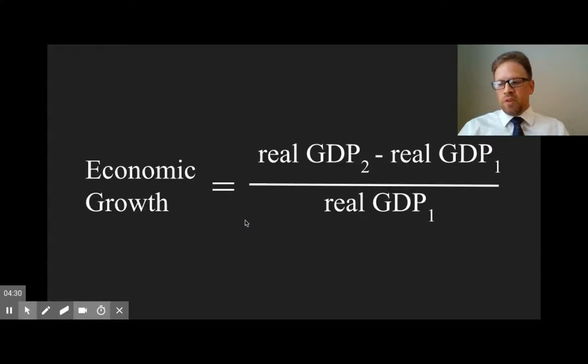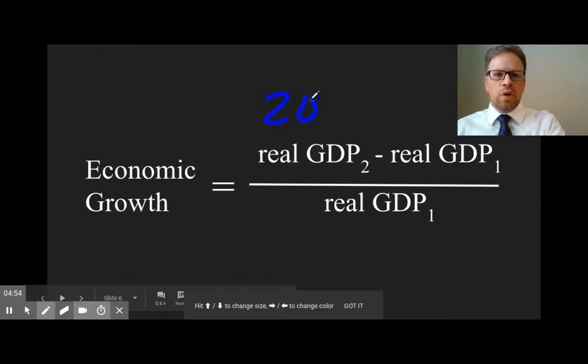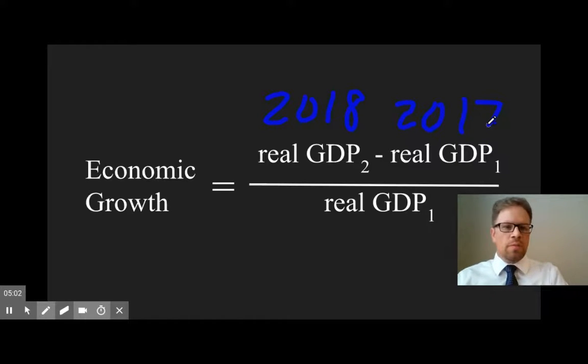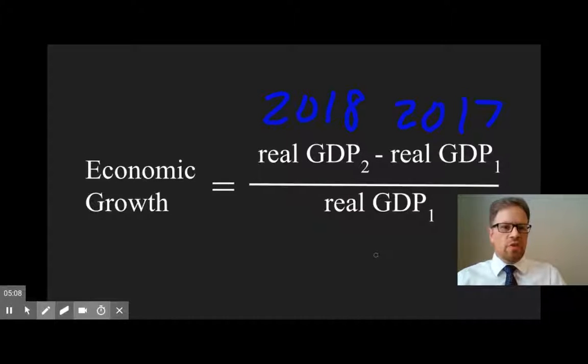Using real GDP from different years, economic growth can actually be calculated using this equation: economic growth equals real GDP from a second time period (this would probably be like 2018) minus real GDP from the first time period (this one would be the information from 2017), and then you divide that by whatever the real GDP was for 2017.